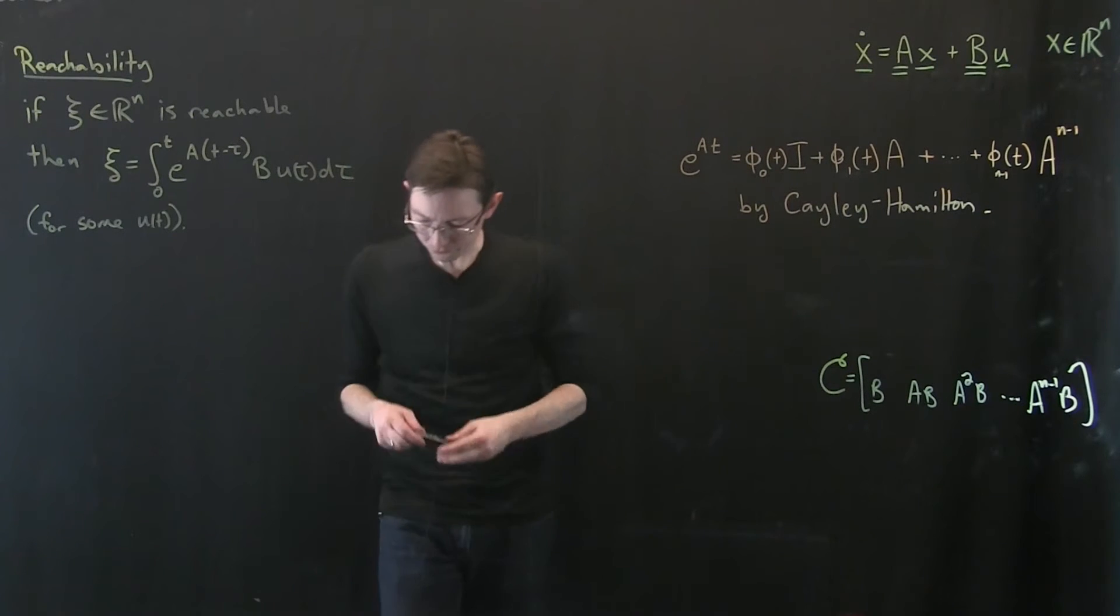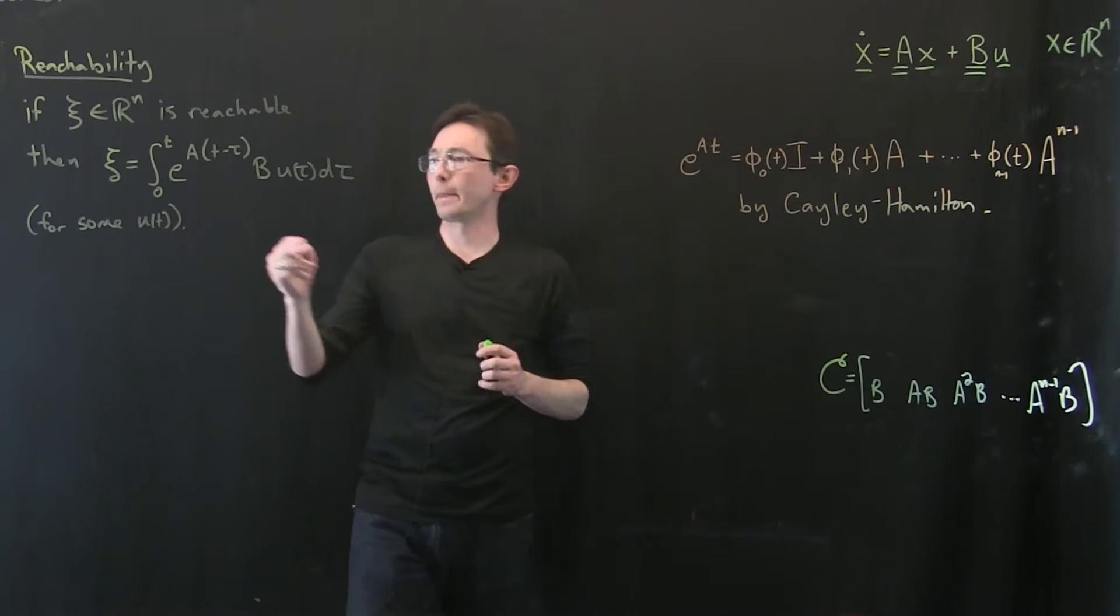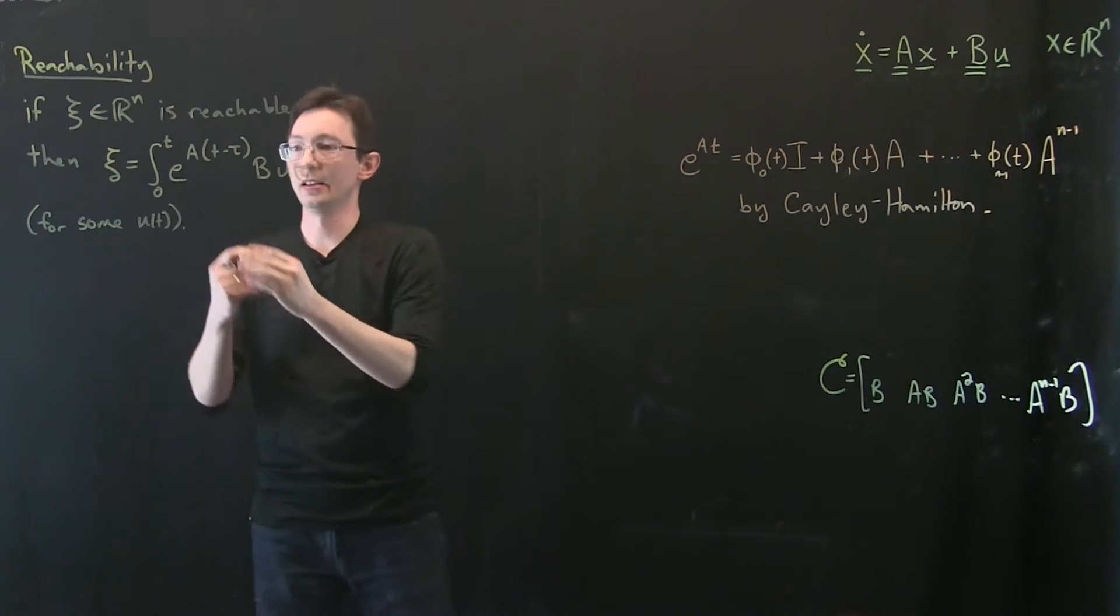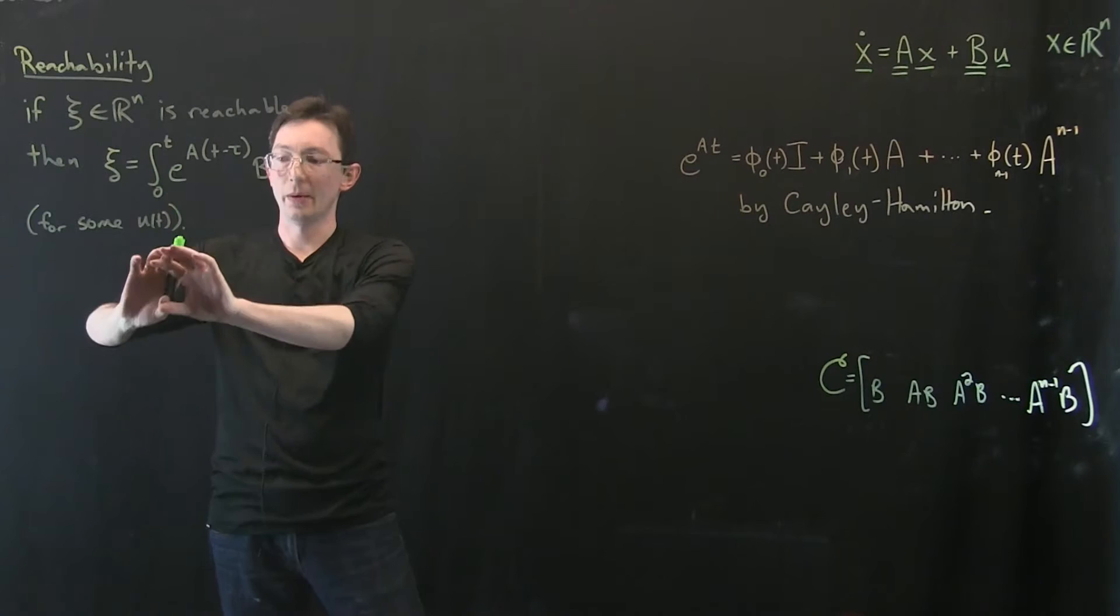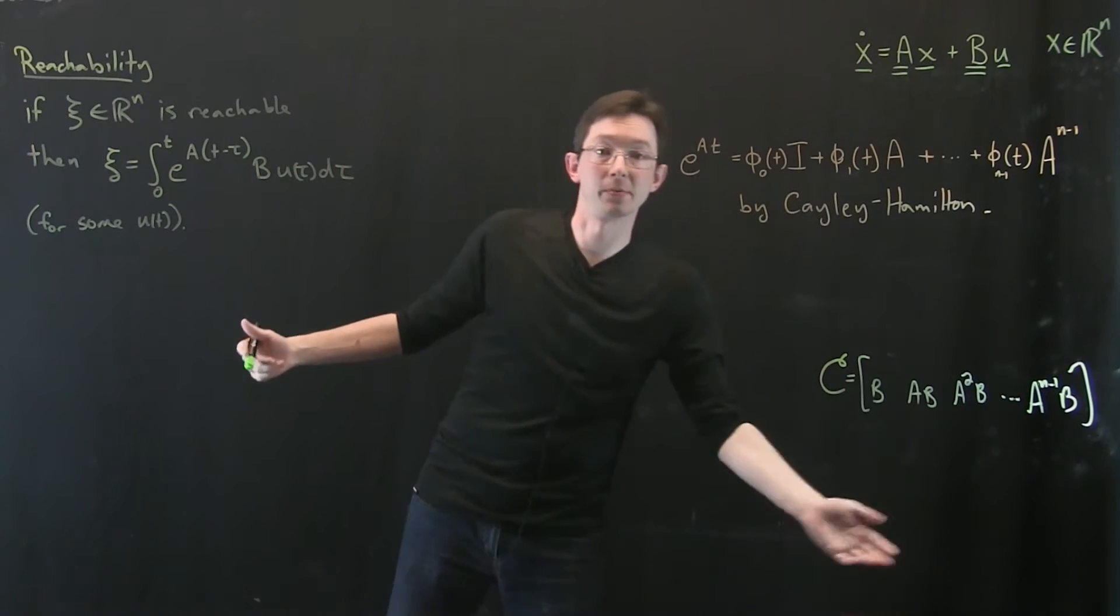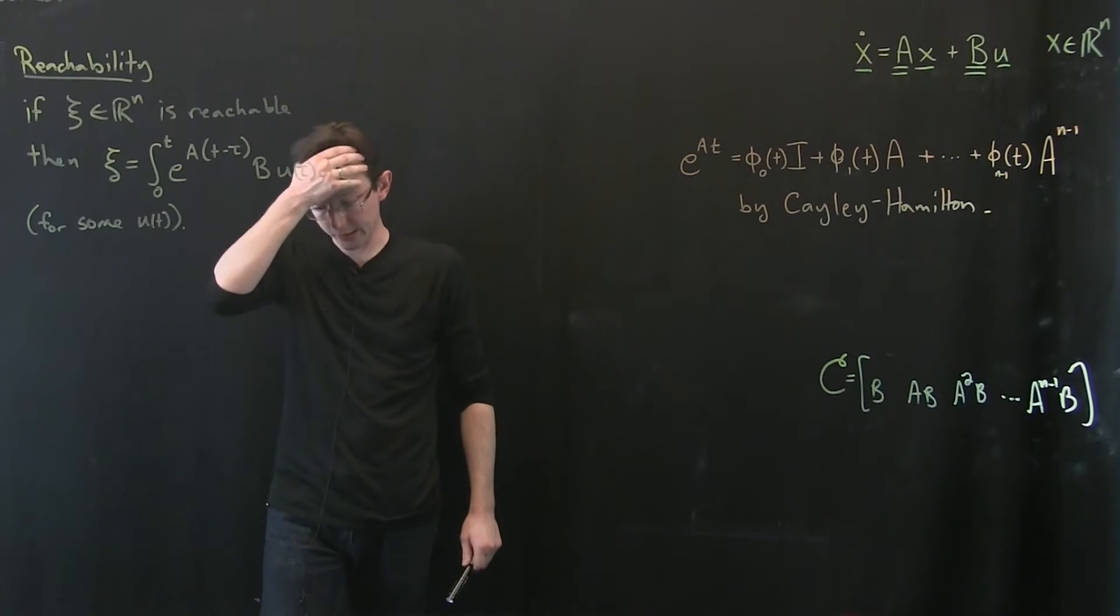Okay, and so what we're going to do here is we're going to essentially take this Cayley-Hamilton expression for e^(At) and we're going to pop it into here. And we're going to now expand this out as a finite matrix product. Okay, so let's just work this out.